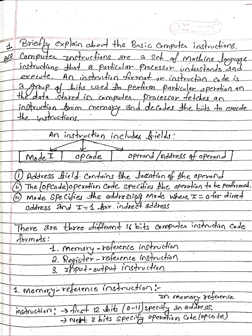Memory reference instruction. In memory reference instruction, first 12 bits (0 to 11) specify an address. Next three bits specify operation code or opcode.